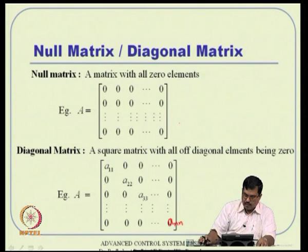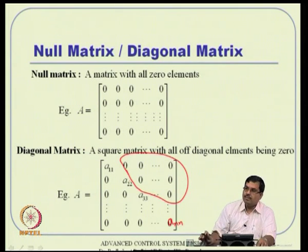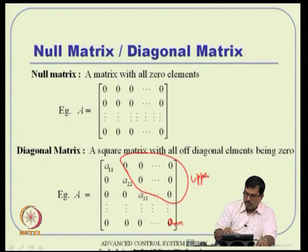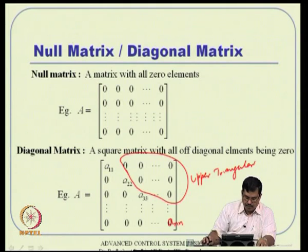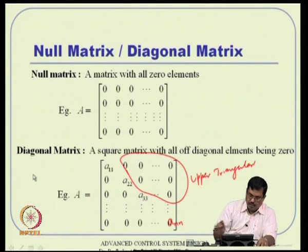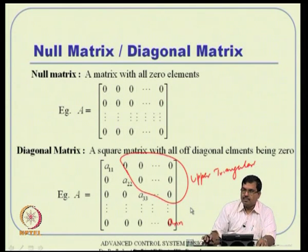A related concept is a triangular matrix. An upper triangular matrix has non-zero elements in the upper half, while the lower half is zero. A lower triangular matrix has non-zero elements in the lower half and zeros in the upper half. A diagonal matrix is a special case of a triangular matrix.